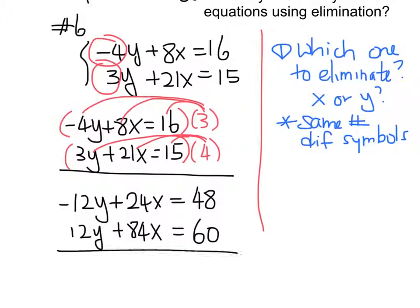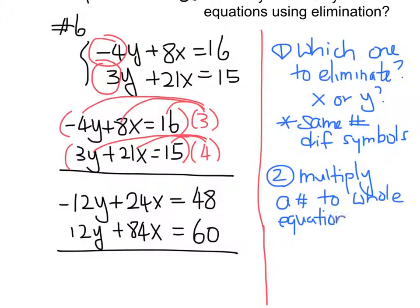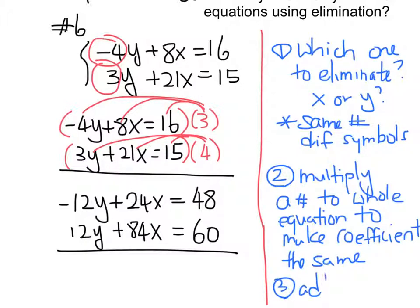So now, what we're going to do is we're going to add top and bottom. And let's not forget to write down steps over here. So step number one over here was deciding which one to eliminate. We needed the same number, different symbols. The next thing that we did was multiply a number to whole equation to make coefficient the same. And then third step was add top and bottom. So now let's add top and bottom.